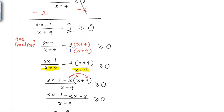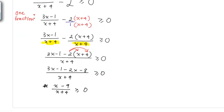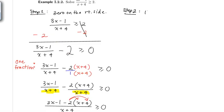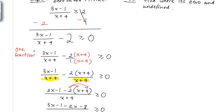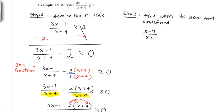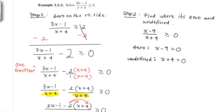Now, step two: find where the rational expression (x minus 9) over (x plus 4) is zero and undefined. Where the left side equals zero is where x minus 9 equals 0, and where it is undefined is where the denominator x plus 4 equals 0. This gives x equals 9 and x equals negative 4, respectively.